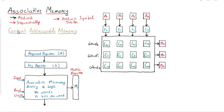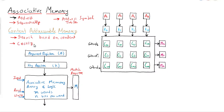What is content addressable memory? It is a memory which has the capability to search data based on the content — search is done based on content rather than address. This kind of memory is comparatively costly compared to RAM, because it has both storage capacity as well as logic to detect and perform the search.